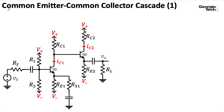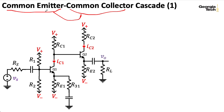Our common emitter–common collector cascade wasn't that much different from our common emitter–common emitter cascade. In the next lecture, I'm going to reverse the order and do common collector followed by common emitter. We'll see that this actually makes things a lot more complicated, both in terms of biasing and figuring out the input impedance. See you in the next lecture.